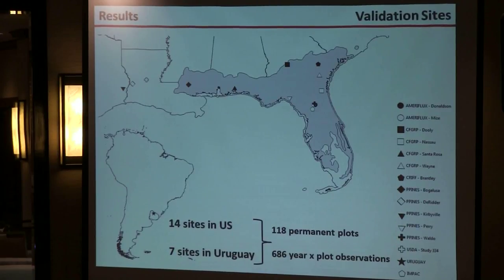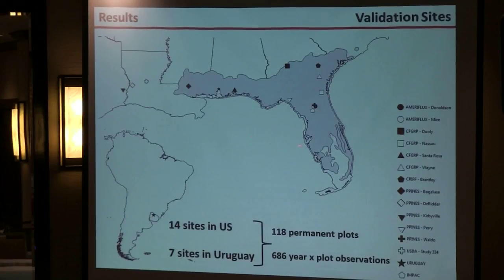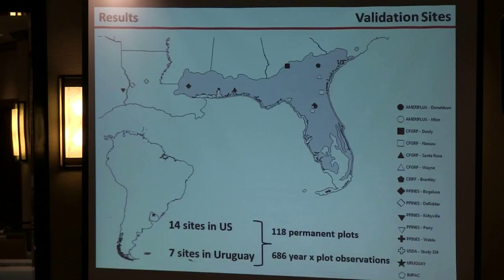There are many other parameters including allocation, canopy closure dynamics, mortality, and allometry. Two months ago, we published the manuscript in Forest Ecology and Management. We validated the model on 14 sites in the United States — shown on this map — with some sites outside the natural distribution of slash pine, such as Texas, and also seven sites in Uruguay, because the model should work anywhere the species grows. In total, we have about 118 permanent plots measured several times, giving us almost 700 plot-year observations used for validation.